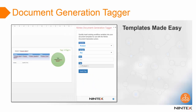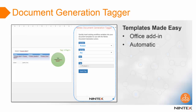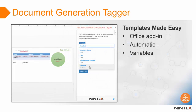The document generation tagger is an Office add-in that helps you create templates. It will automatically load into Word, Excel, and PowerPoint when you open or create a template from the action. You can use the document generation tagger to track the variables in your workflow and to add tags to templates when creating documents. These tags are mapped to variables available in the workflow and will dynamically populate your document with this data.